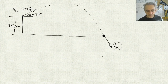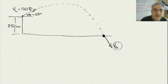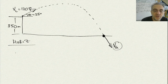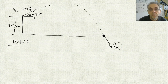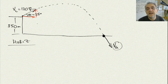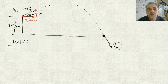The solution for this is: first we have to analyze both horizontal and vertical, but let's do horizontal first. Essentially, we've got our horizontal velocity and our vertical velocity. Our horizontal is going to be VL cosine theta, and our vertical is going to be VL sine theta.